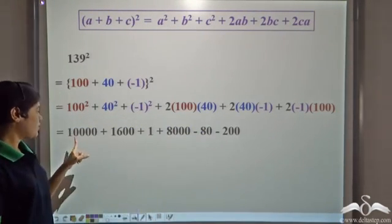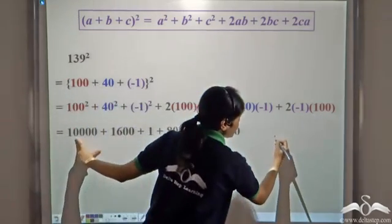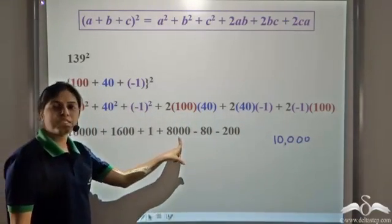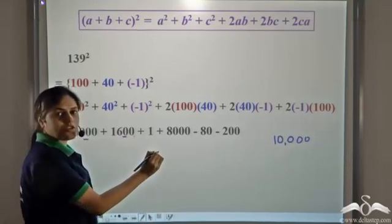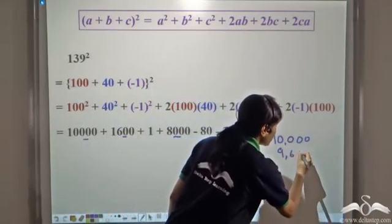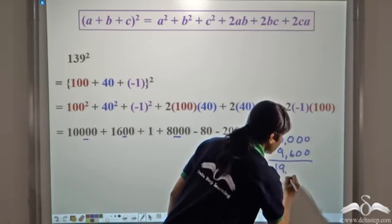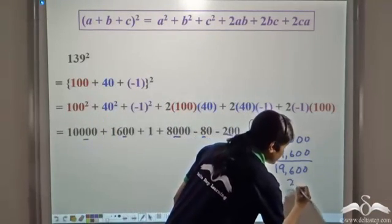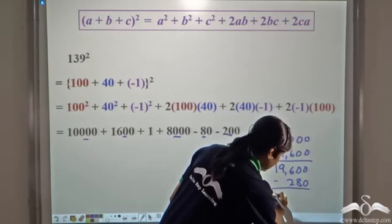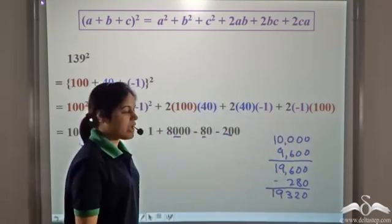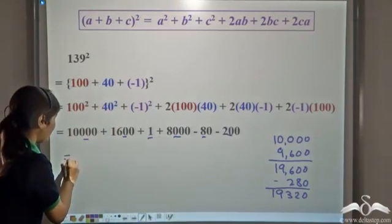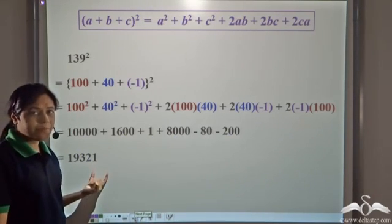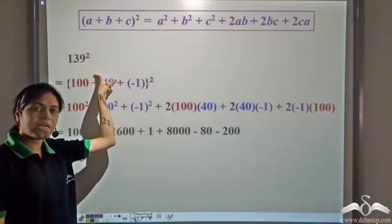Now we can combine these. We have 10,000. Then 1,600 plus 8,000 is 9,600, giving us 19,600. Then minus 80 minus 200 is minus 280. So we get 19,320, and adding the 1 we have left gives us 19,321. So this was much simpler and faster than calculating 139² by normal multiplication.